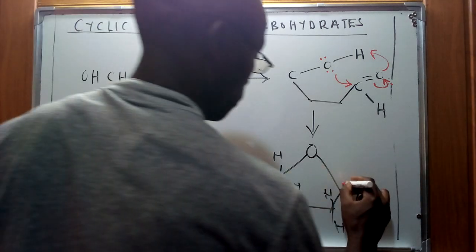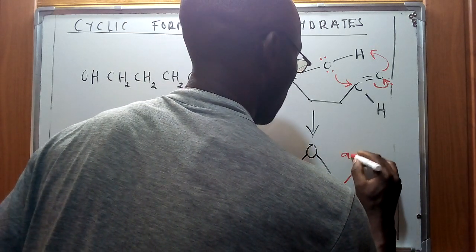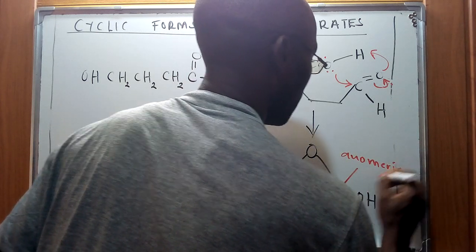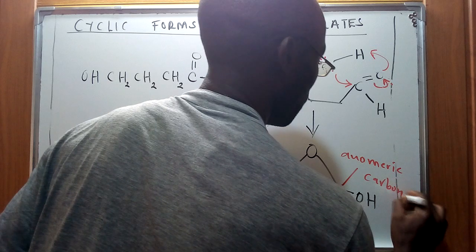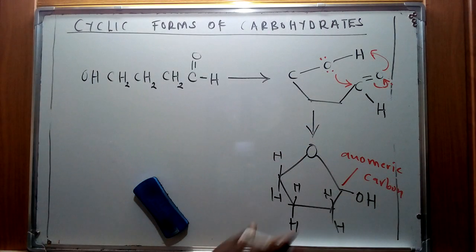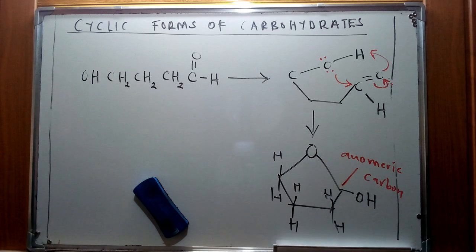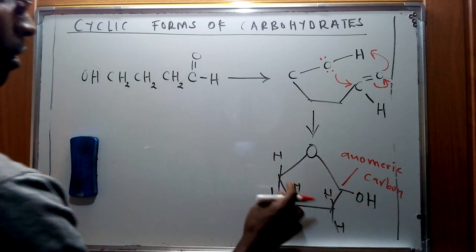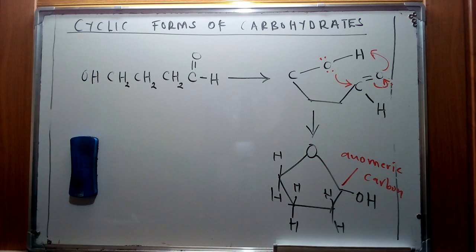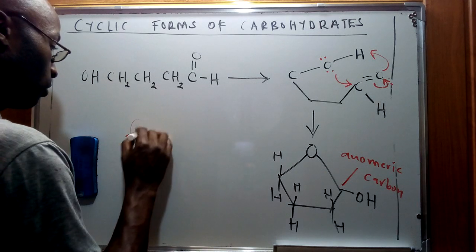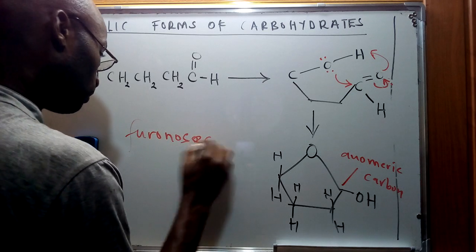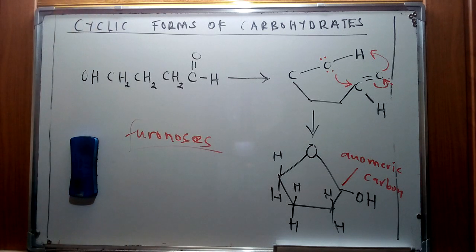It is important to notice that this is the carbonyl carbon that was involved in the rearrangement. We're going to refer to it as the anomeric carbon. This forms a one-two-three-four-five five-membered ring of that carbohydrate, and it's going to be referred to as furanose.